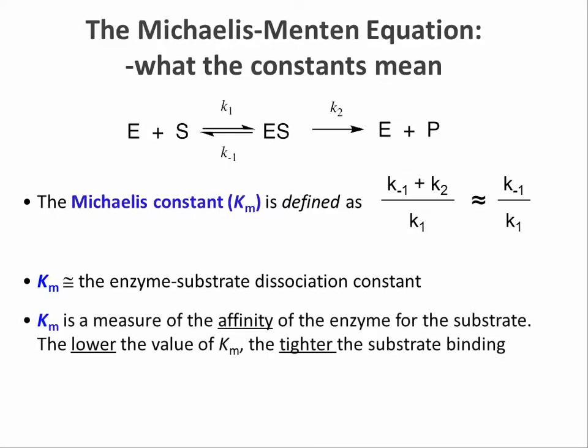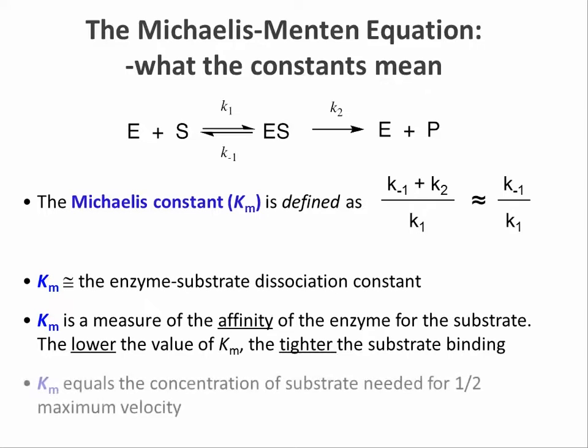The lower the value of Km, the higher the affinity and the tighter the substrate is bound. We have also seen that Km is equivalent to the substrate concentration at which an enzyme operates at half-maximal velocity.